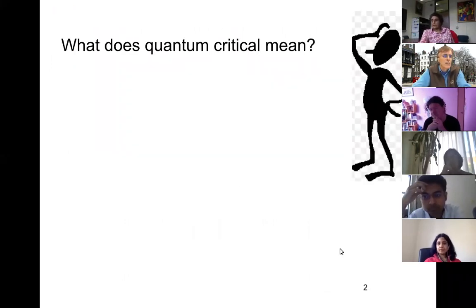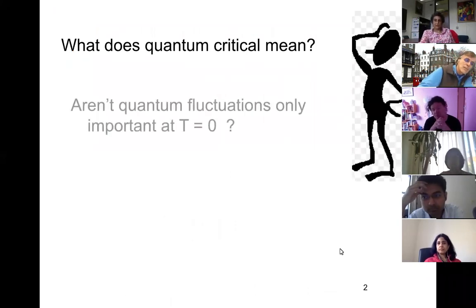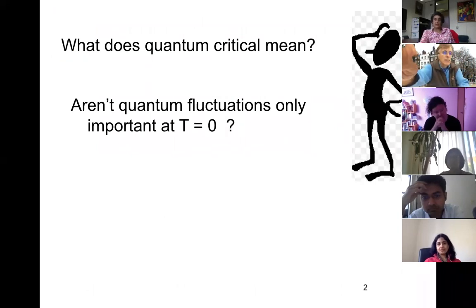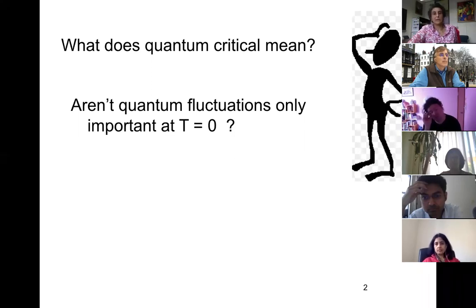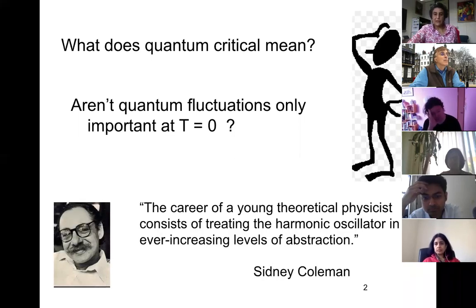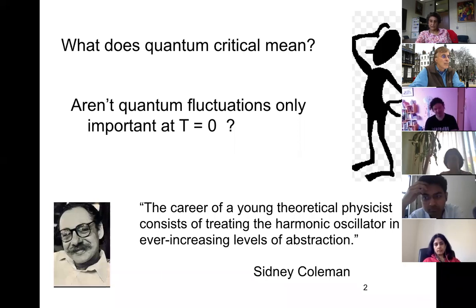Let's start with: what does quantum critical mean? This is a question I get a lot from the ferroelectrics community. Aren't quantum fluctuations only important at T equals zero? So why are we even talking about that — we can't do any measurements at T equals zero. Well, I'll remind you of this wonderful phrase by the great theoretical physicist Sidney Coleman: 'The career of a young theoretical physicist consists of treating the harmonic oscillator in ever increasing levels of abstraction.' So let's go back to the good old harmonic oscillator.